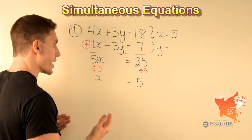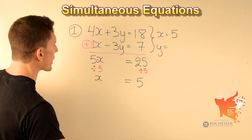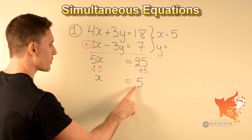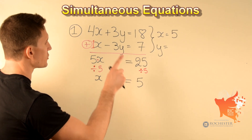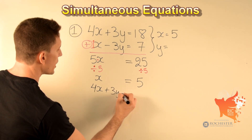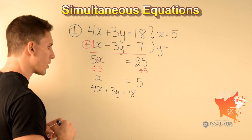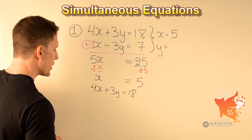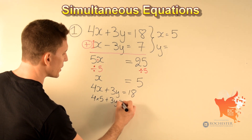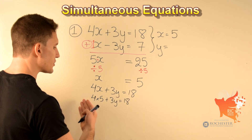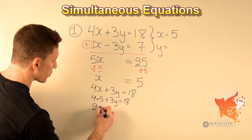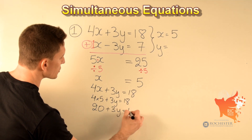Now we have to find y. To find the value of y we go back and choose one of the two equations and substitute the value of x with 5. I'm going to choose the first equation: 4x plus 3y equals 18. Replacing x with 5, we get 4 times 5, which is 20, plus 3y equals 18.